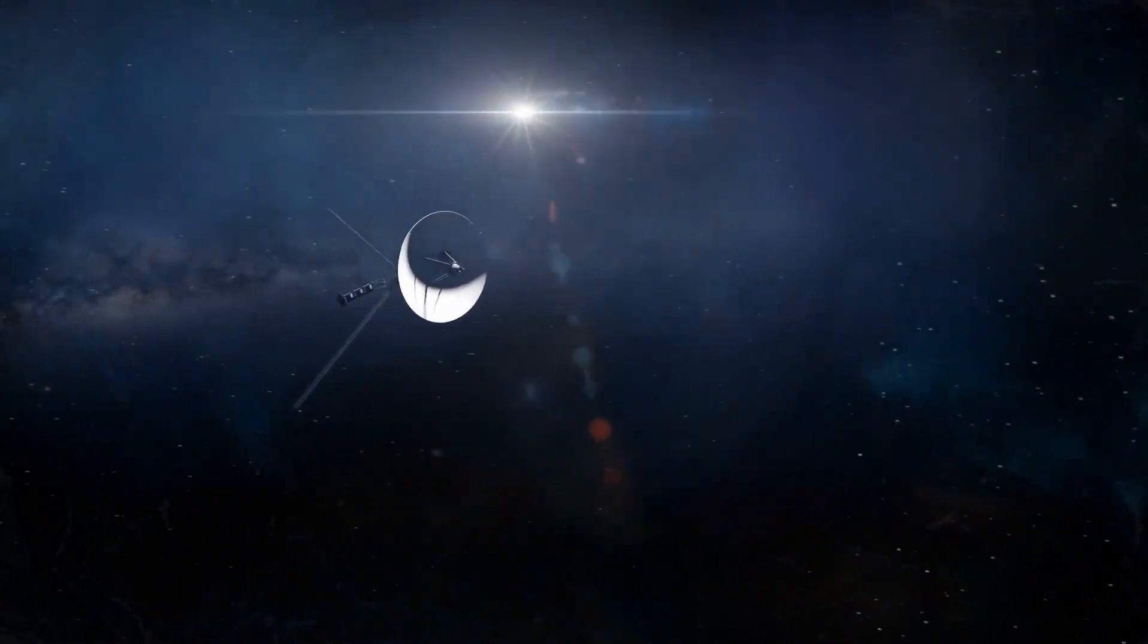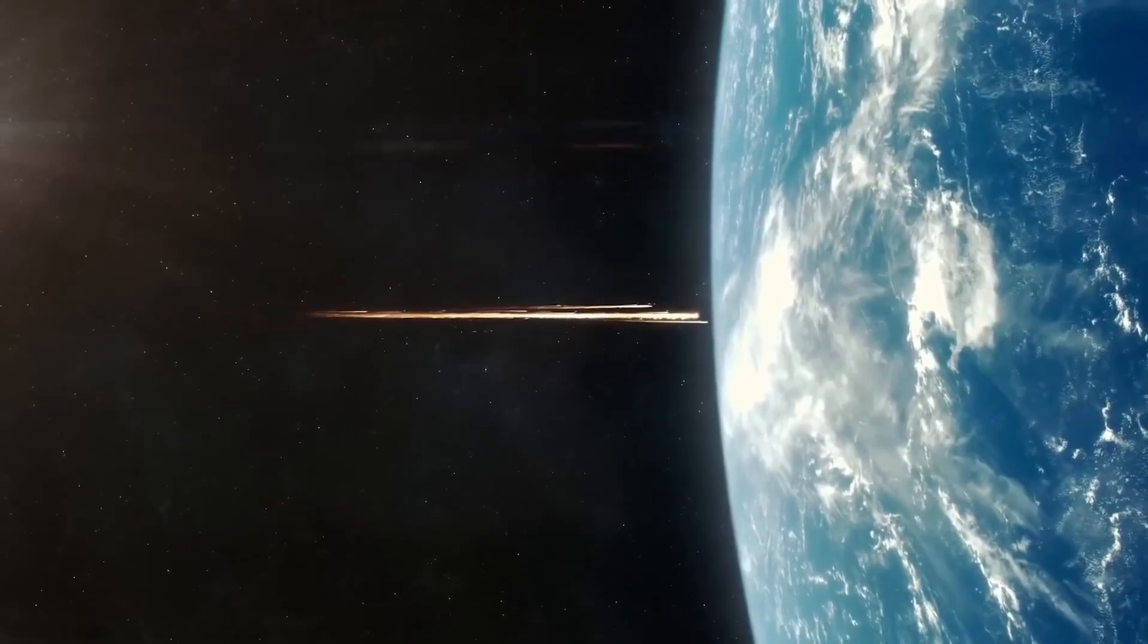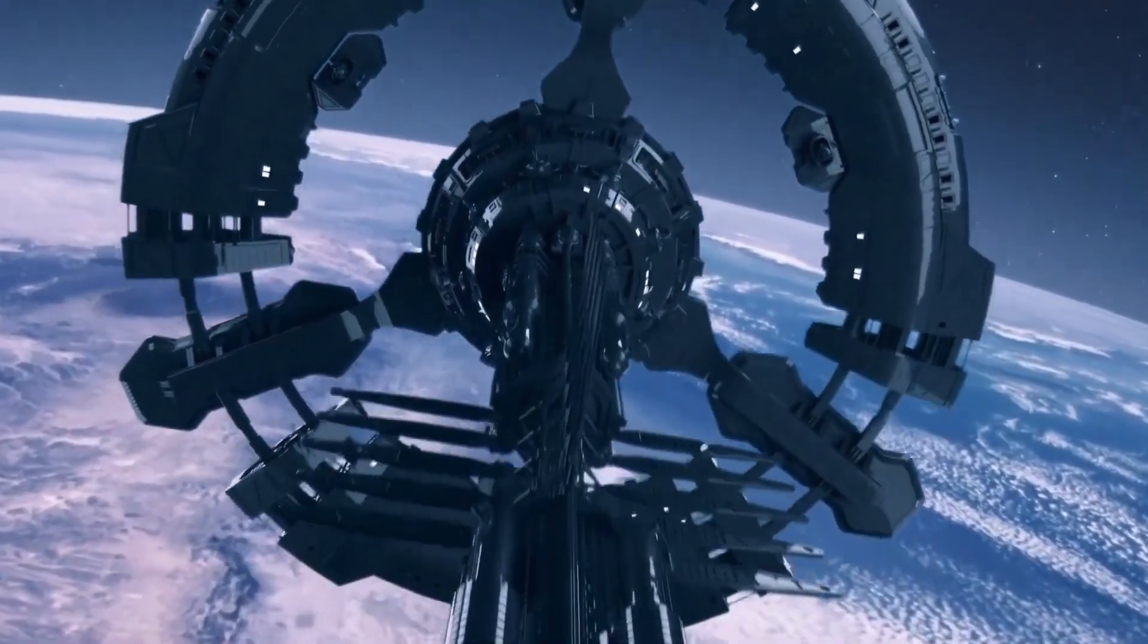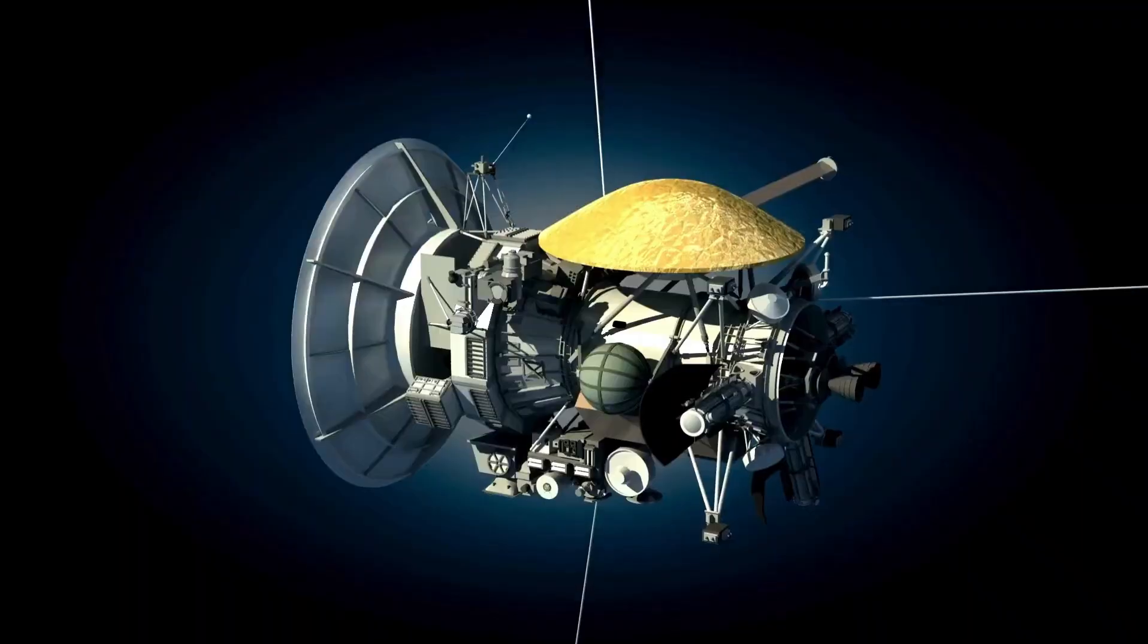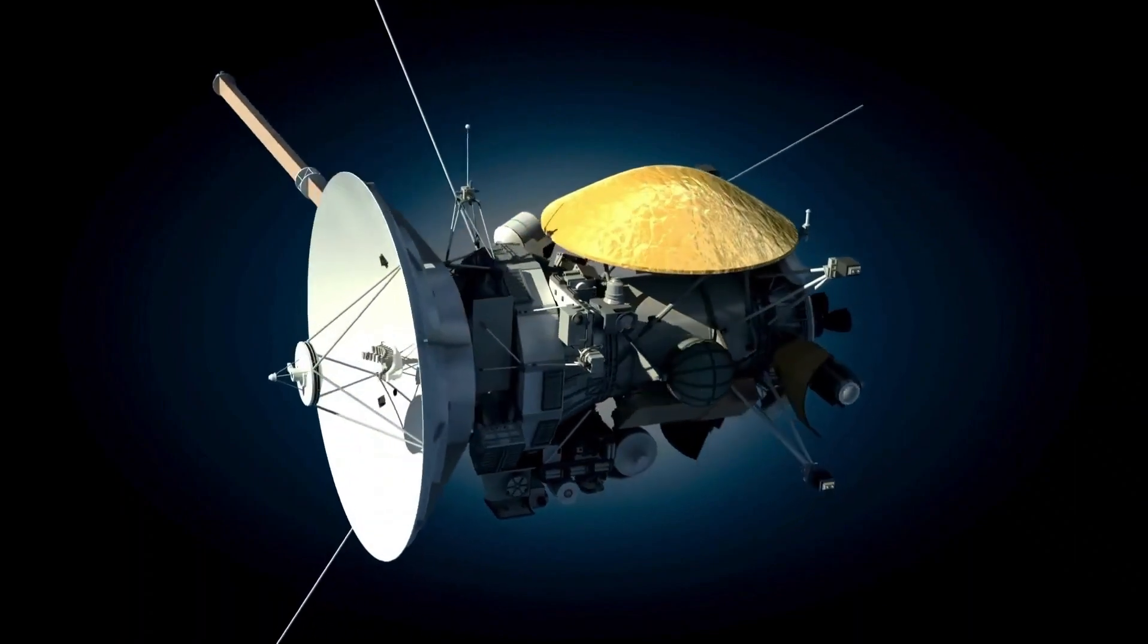Voyager 2 apparently has five operational instruments, while Voyager 1 has four, all powered by a mechanism that converts heat from plutonium's radioactive decay into electricity. But NASA has had to resort to a triage mode as the power output of the Voyagers diminishes by approximately 4 watts every year.